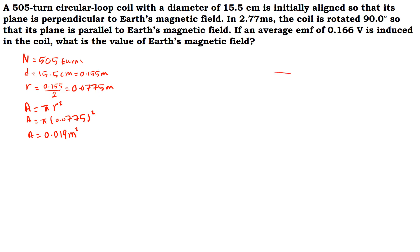We continue reading: initially aligned so that its plane is perpendicular to the Earth's magnetic field. So if this is the circular coil and the magnetic field is perpendicular to it, this is the direction of the magnetic field. The normal is also perpendicular to the surface, so they are parallel. Then the angle between the magnetic field and the normal is zero degrees.